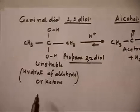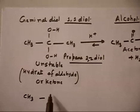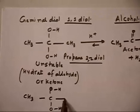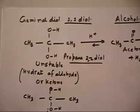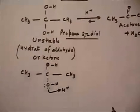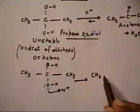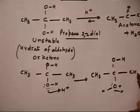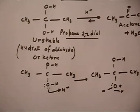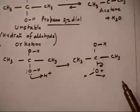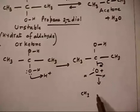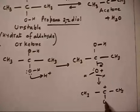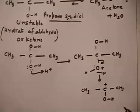In acidic medium, H+ protonates one of the OH groups: the lone pair on OH takes H+, giving CH3C(OH)(OH2+)CH3. The OH2+ becomes a good leaving group and is released, giving the carbocation CH3C+(OH)CH3.